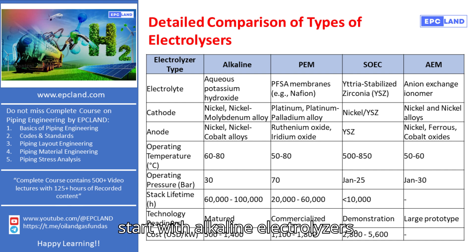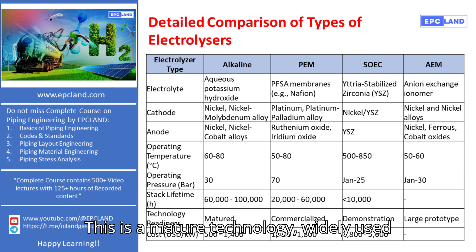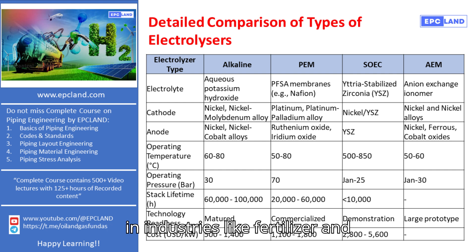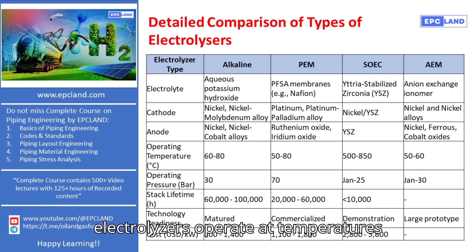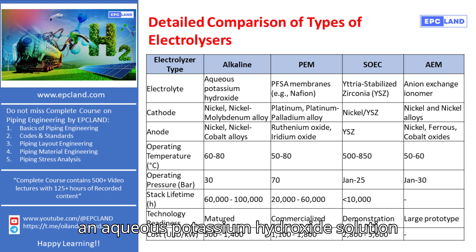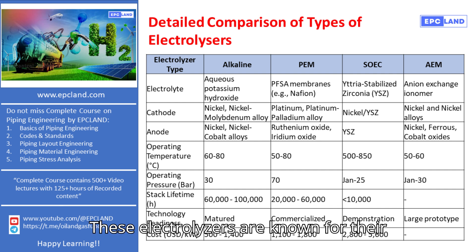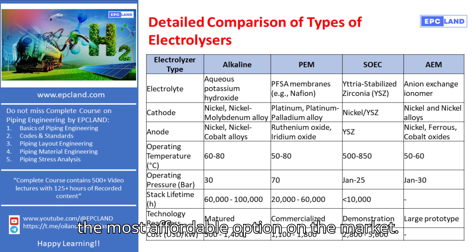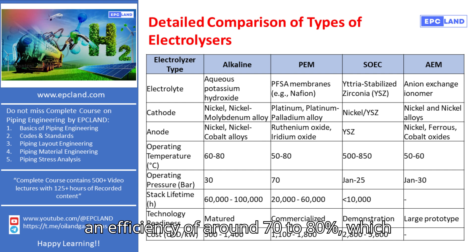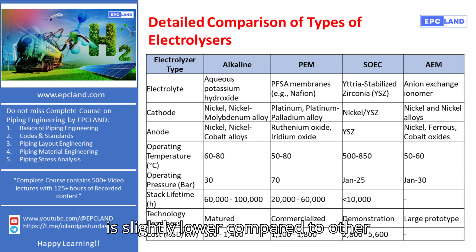Let's start with alkaline electrolyzers. This is a mature technology, widely used in industries like fertilizer and chlorine production. Alkaline electrolyzers operate at temperatures between 60 to 80 degrees Celsius and at a pressure of about 30 bar. They use an aqueous potassium hydroxide solution as the electrolyte, with nickel-based materials for both the anode and cathode. These electrolyzers are known for their simple and low-cost design, making them the most affordable option on the market. However, their thick membranes result in an efficiency of around 70 to 80 percent, which is slightly lower compared to other technologies.